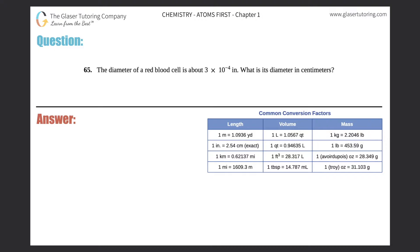Number 65: The diameter of a red blood cell is about 3 × 10⁻⁴ inches. What is its diameter in centimeters? Total conversion question. By the way, who can tell me the scientific term for what a red blood cell is?